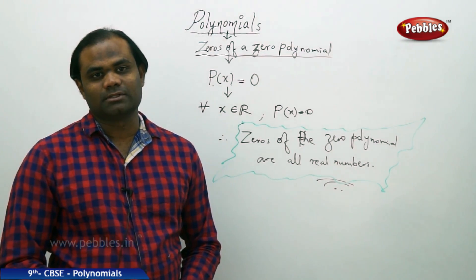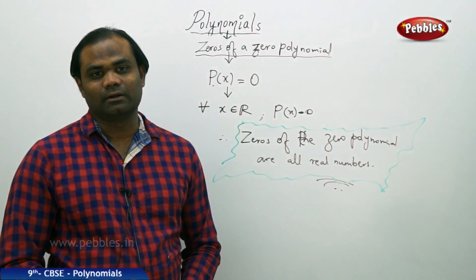In this session we also discuss the different terminologies used for zeros of a polynomial. As we know, the zeros of the polynomial are the values of x for which the polynomial is equal to zero, and we have different names through which we understand this concept.